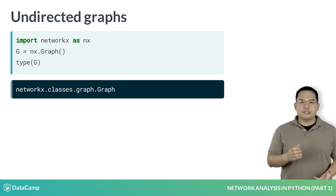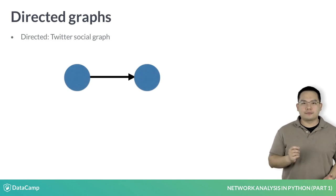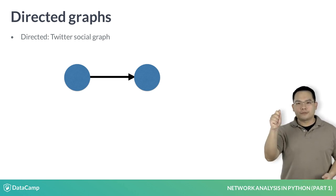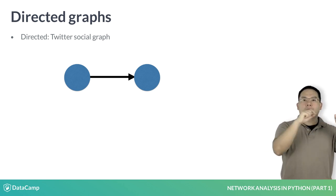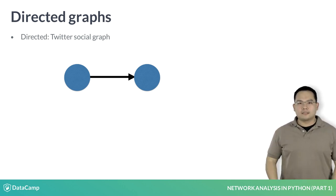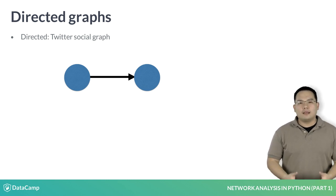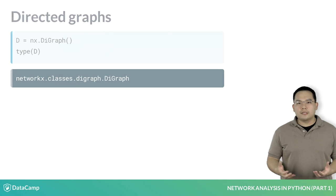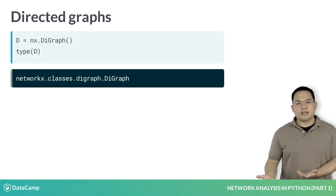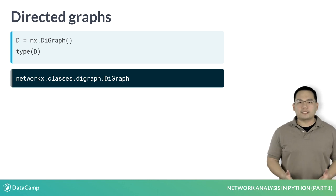On the other hand, Twitter's social graph is a directed network. This is because of the nature of how users interact with one another. For example, one user may follow another user, but that other user may not follow back. As such, there is an inherent directionality associated with the graph. If we explore this in the IPython terminal, you can instantiate an empty directed graph in NetworkX using nx.digraph. If you query for its type, it will return a digraph object.